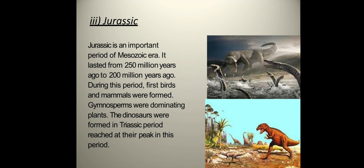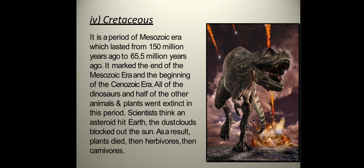Third is the Jurassic period, an important period of the Mesozoic era, which lasted from 250 million years ago to 200 million years ago. During this period, the first birds and mammals were formed. Gymnosperms were the dominating plants. Dinosaurs, formed in the Triassic period, reached their peak in this period. The Cretaceous period is a period of the Mesozoic era which lasted from 150 million years ago to 65.5 million years ago. It marked the end of the Mesozoic era and the beginning of the Cenozoic era. All of the dinosaurs and half of the other animals and plants went extinct in this period. Scientists think an asteroid hit Earth and dust clouds blocked out the sun, causing plants to die, followed by herbivores and then carnivores.